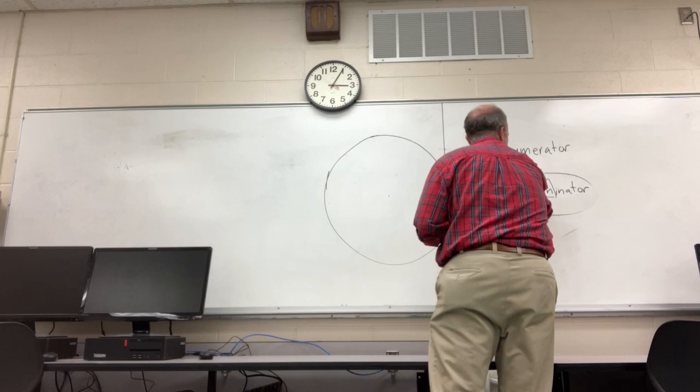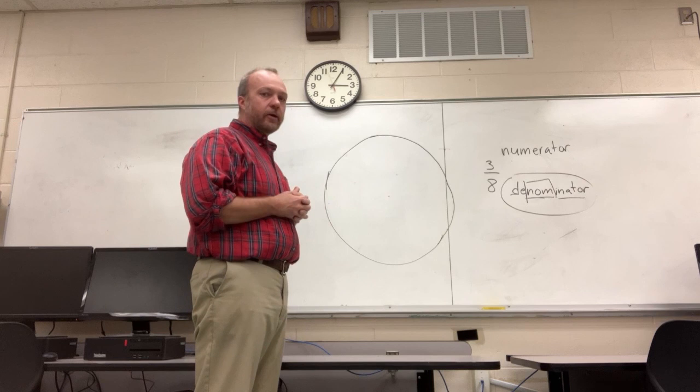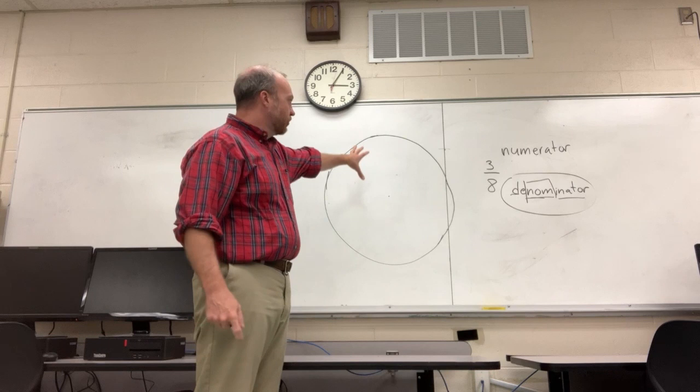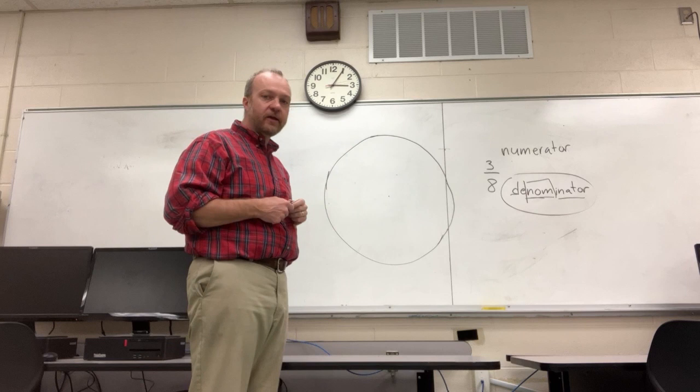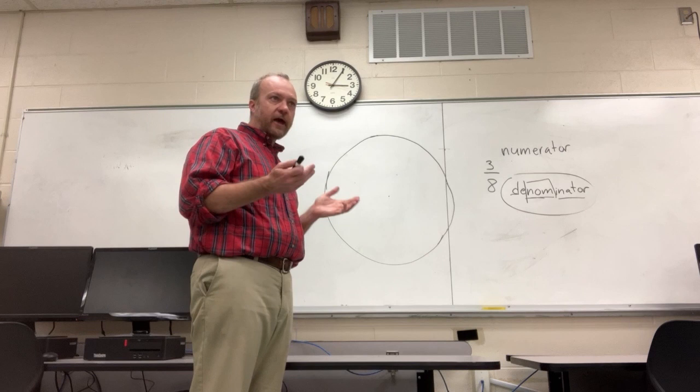So denominator doesn't mean the number on bottom. It means the name of the type of fraction. So if we look over here at a circle and we use this circle as a whole, and we're going to look at a fraction, we want to talk about the types of pieces. If you're talking about a pizza and you say you have one piece of pizza, it doesn't really tell you how much you have. You need to know what kind of piece it is. Is it a half or is it a sixteenth? Well, the denominator tells you that. It tells you the name.